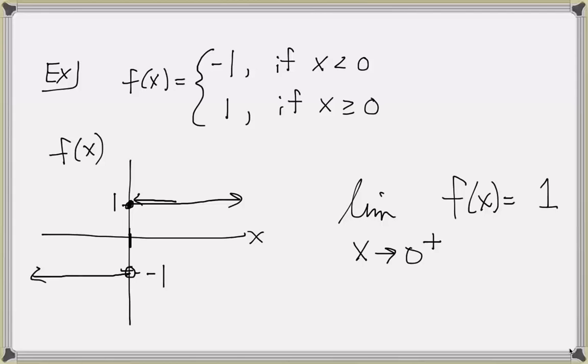We can do the same analysis for a left-hand limit. If we want to look at the left-hand limit of f as x approaches 0, we follow along the curve of f of x as it approaches 0, but now only from the left side — following the function along to the left of the y-axis. We see that the function stays at height negative 1, and in fact the left-hand limit is negative 1, because the function's values are getting closer and closer to negative 1.